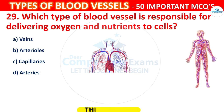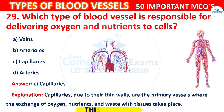The correct answer is C, that is Capillaries. Capillaries, due to their thin walls, are the primary vessels where the exchange of oxygen, nutrients and waste with tissues takes place.